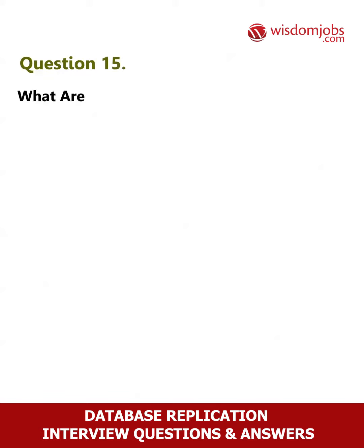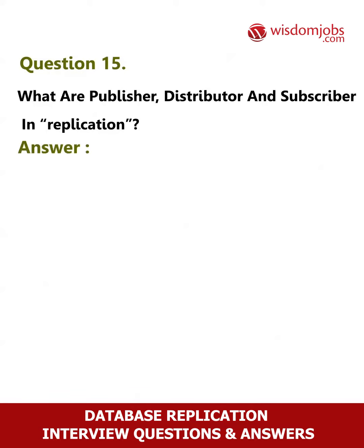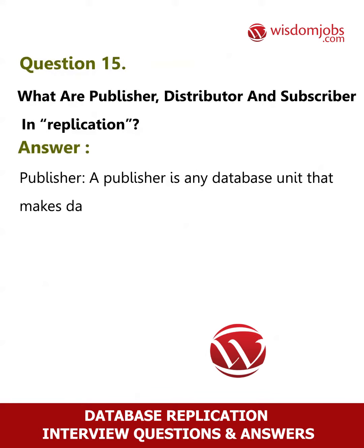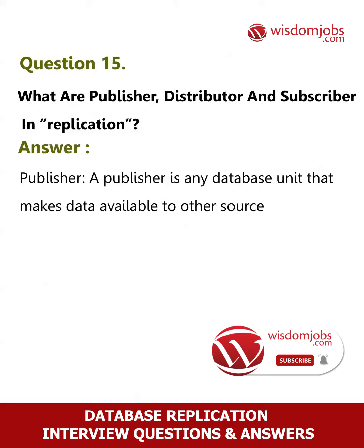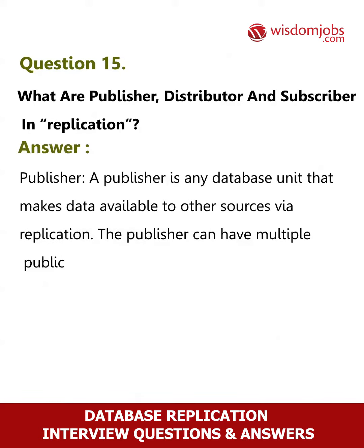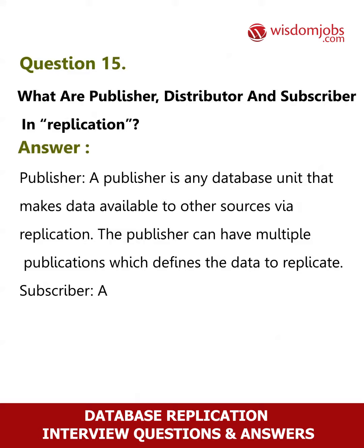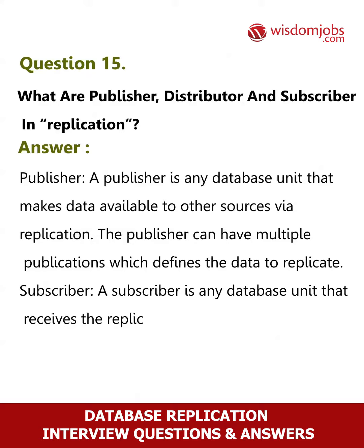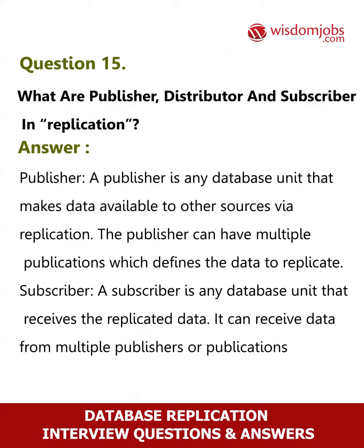Question 15. What are a publisher, distributor, and subscriber in replication? Answer. Publisher: A publisher is any database unit that makes data available to other sources via replication. The publisher can have multiple publications which define the data to replicate. Subscriber: A subscriber is any database unit that receives the replicated data. It can receive data from multiple publishers or publications. Data can be republished to other subscribers.